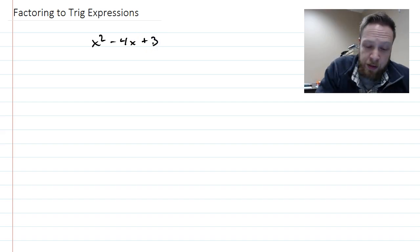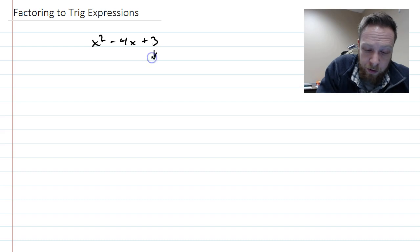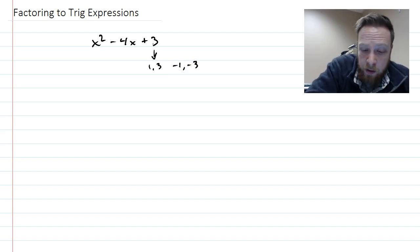And so just as a refresher, you had to think about things that would go into 3. And in this case, it's easier. It's either 1 and 3 or negative 1 and negative 3 to multiply to positive 3.